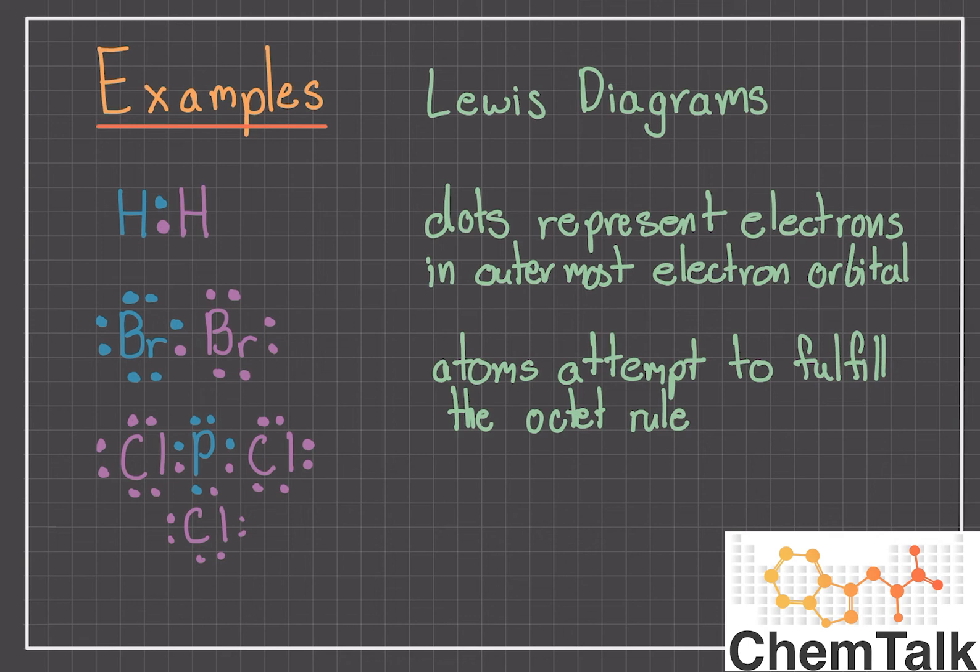Additionally, covalent bonds can be single, double, or triple bonds, as long as the atoms end up in an octet configuration.